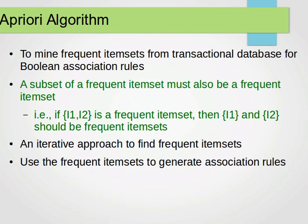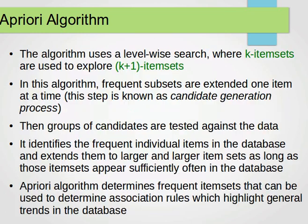The Apriori algorithm is used to mine item sets from transaction databases for boolean association rules — we'll cover that in the next video. A key concept this algorithm is based on: any subset of a frequent item set must also be a frequent item set. For example, if item set {1, 2} is frequent, then the subsets {1} and {2} must also be frequent. It's an iterative approach that finds frequent item sets and uses them to generate association rules.